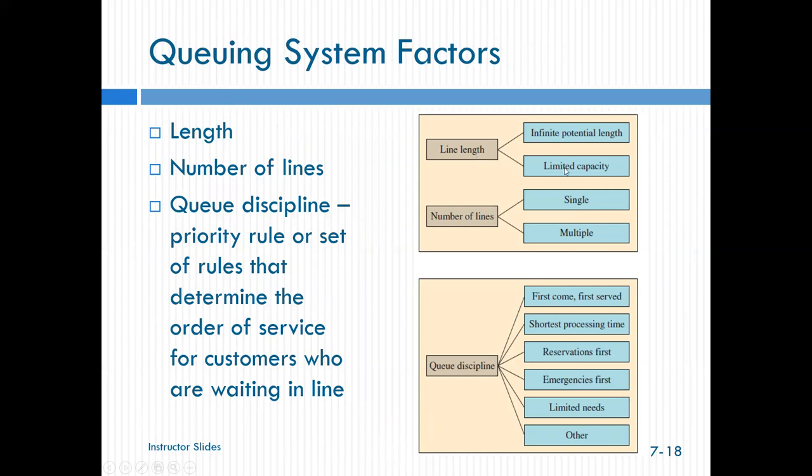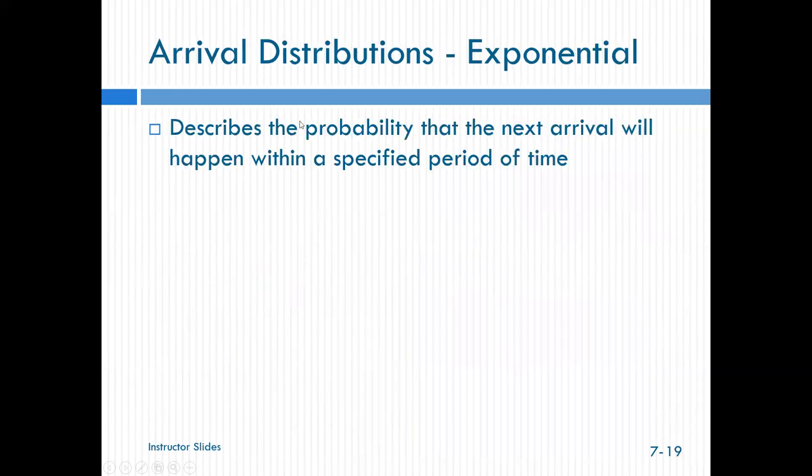And so we're interested in these factors. The length of line. Is it infinite or limited? Infinite or finite? We talked about that. How many lines are there? Is it a single line or a multiple line? Think Wendy's where you walk in and you have one line that chains around or think multiple McDonald's when you walk in and there's multiple, at least that was the way it was. I haven't been in for a while, but you used to just walk in and kind of pick a register to get in line behind. And what's your queue discipline? Are you first come first serve? Do you look for people with the shortest processing time and serve them? Do you take your reservations first? Is it emergencies first? Is it some type of limited needs first? Or are there some other things that you consider in terms of queue discipline? But queue discipline generally is the priority rule or set of rules that determine the order of service for customers who are waiting in line.